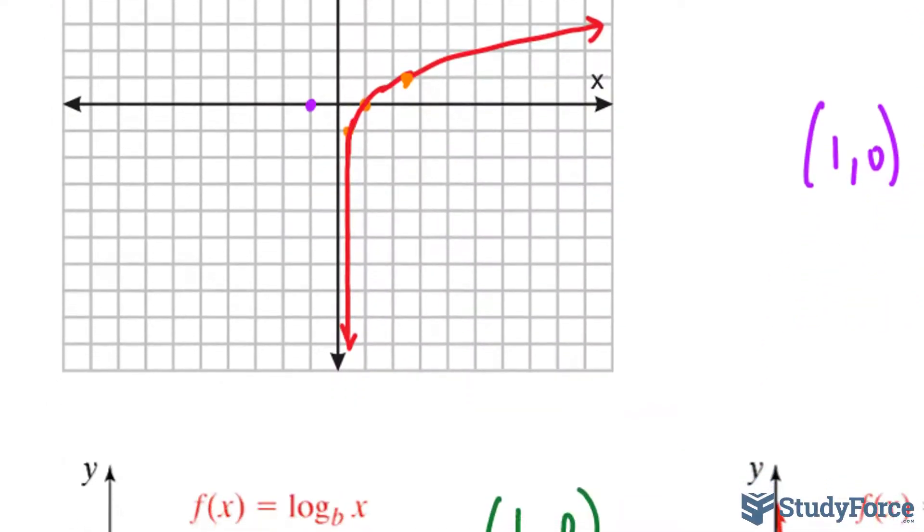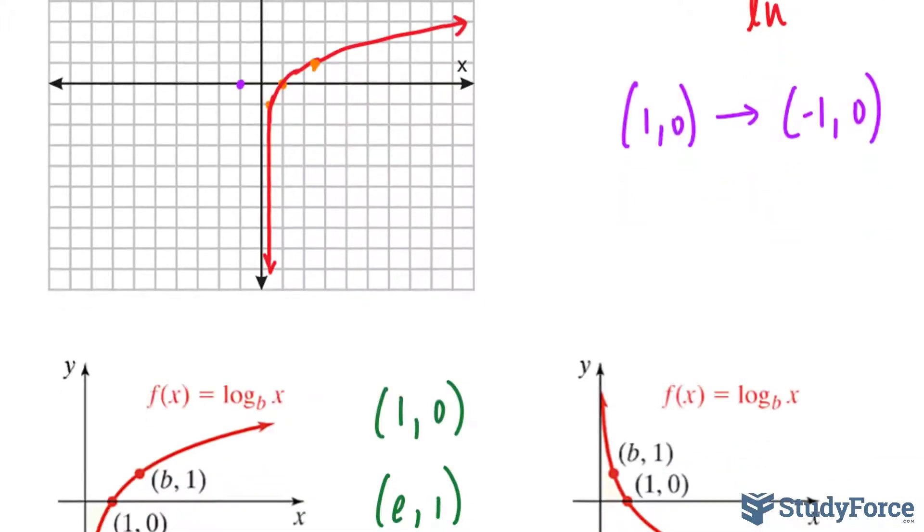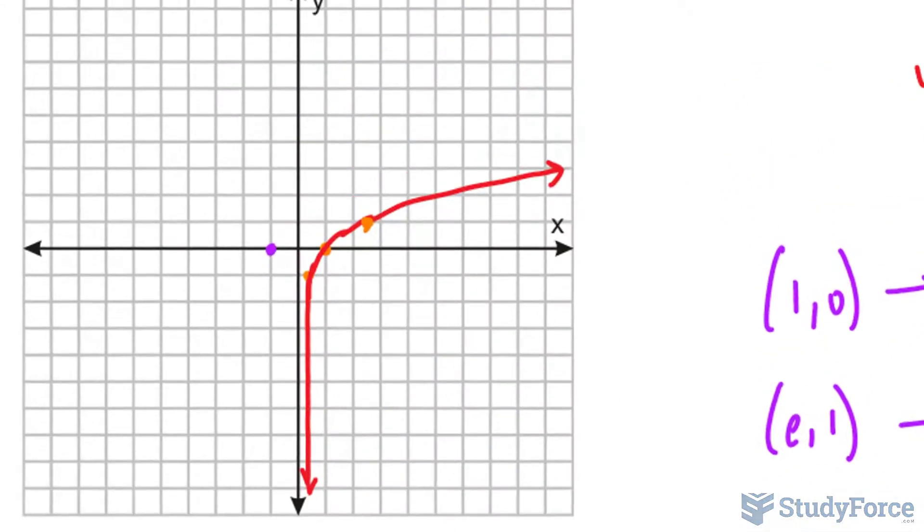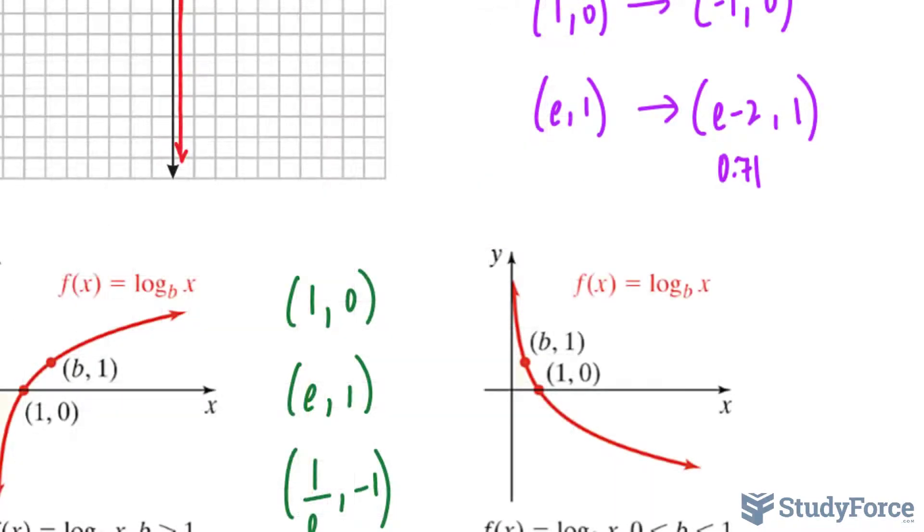We will have another point, a brand new point. Let's transform e and 1. e and 1 becomes e minus 2 and 1. e minus 2, that's like saying 2.71 minus 2. That's approximately 0.71. So a point at 0.71, that's in between this block and 1. So let's place it right here.